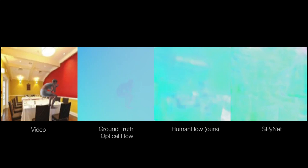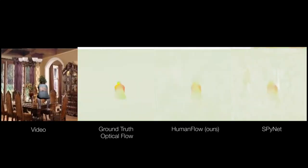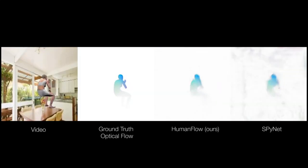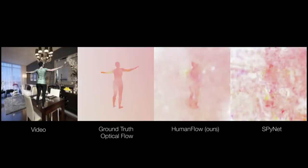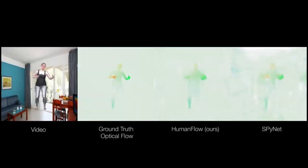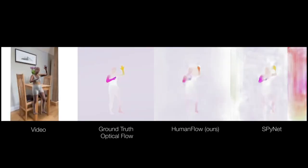Here we show a comparison with SPINET. SPINET is a deep network for real-time flow estimation trained for generic scenes. Unlike SPINET, our human flow network is trained end to end.